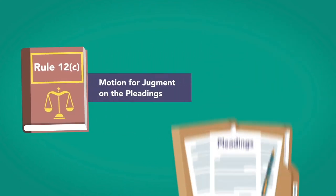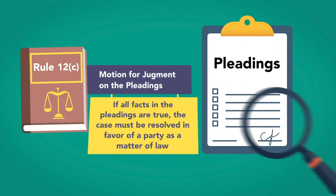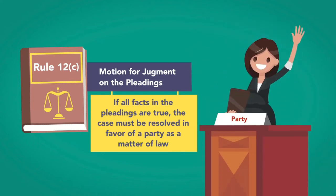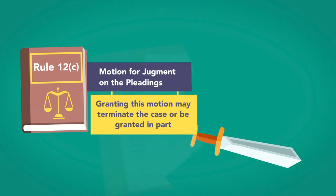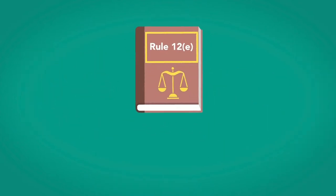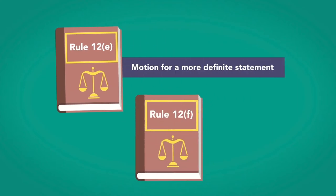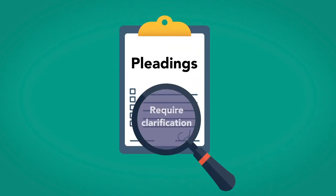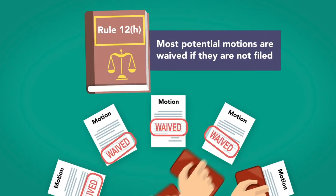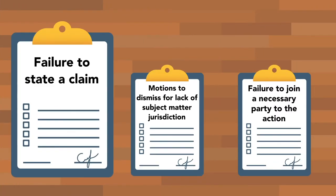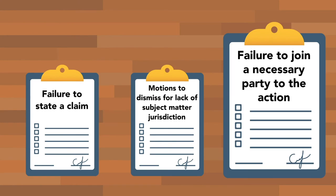Rule 12(c), motion for judgment on the pleadings — this motion alleges that if all facts in the pleadings are true, the case must be resolved in favor of a party as a matter of law. Granting this motion may terminate the case or be granted in part, such as with respect to a single issue. Rule 12(e), motion for a more definite statement, and 12(f), motion to strike, have to do with a motion to alter or require clarification of the language in the other party's pleadings. Rule 12(h) states that most potential motions are waived if they are not filed, except for motions to dismiss for lack of subject matter jurisdiction, failure to state a claim, or failure to join a necessary party to the action.